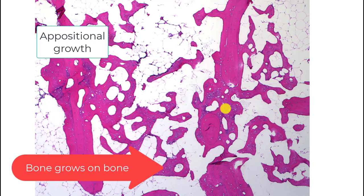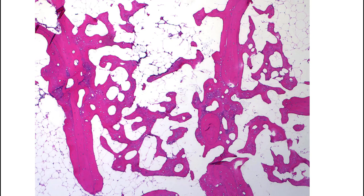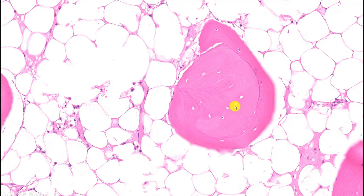Roman arches also appear in cancellous bone — this is pre-existing lamellar bone with all the new woven bone deposited on it. Bone generally grows by appositional growth, so bone grows on bone. You often see this in compression fractures but also in other conditions. Here's an example of what happens when it heals — oppositional lamellar bone is deposited on the surface of the pre-existing cancellous bone.